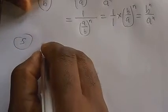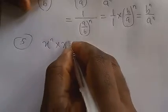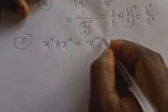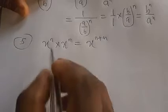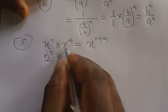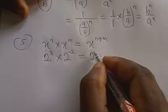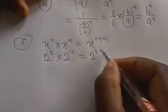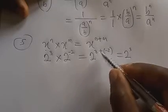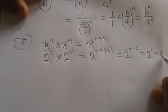Law number 5: x raised to power n times x raised to power m equals x raised to power n plus m. For example, 2 raised to power 3 times 2 raised to power (−2): pick the base 2, add the powers 3 + (−2) = 1, giving 2 raised to power 1, which equals 2.